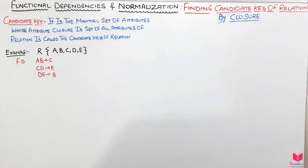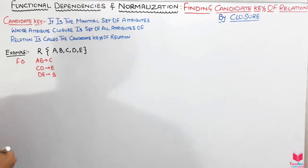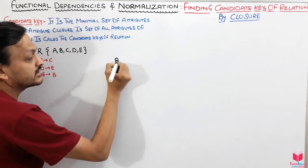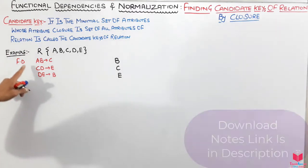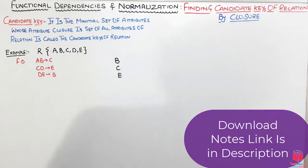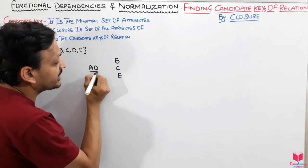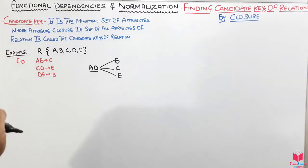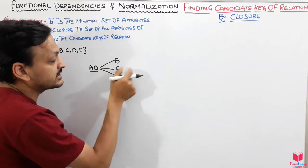There is a strategy to follow for finding the candidate key. First, write down all the left-hand side attributes from the functional dependencies: B, C, E. The remaining attributes not appearing on any left-hand side are A and D. We then combine AD with B, AD with C, and AD with E to find candidate keys.